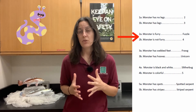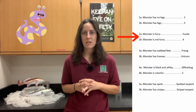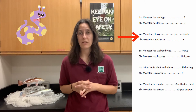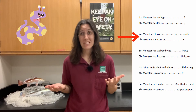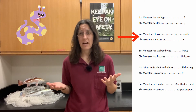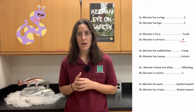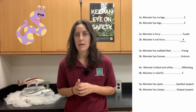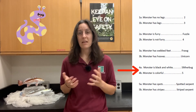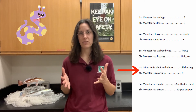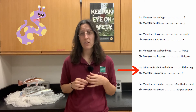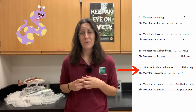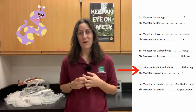It looks like the key is asking us to move on to step number two. Step two is going to ask us to identify whether or not our monster is furry. I don't see any fur on this little guy. So it looks like we are now going to skip step three and move on to step four. Step four is asking us about the color of our monster — is it black and white or is it colorful? He's a really pretty purple and yellow, so he's pretty colorful.